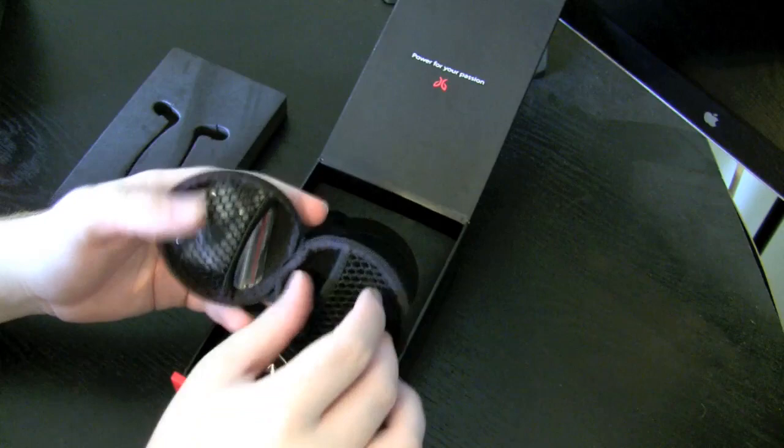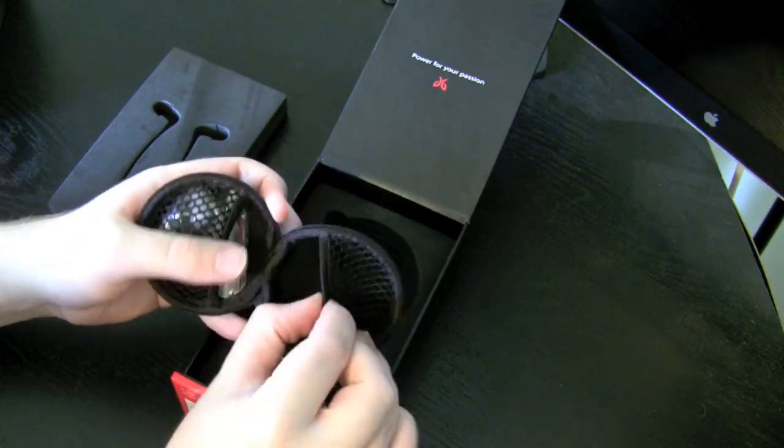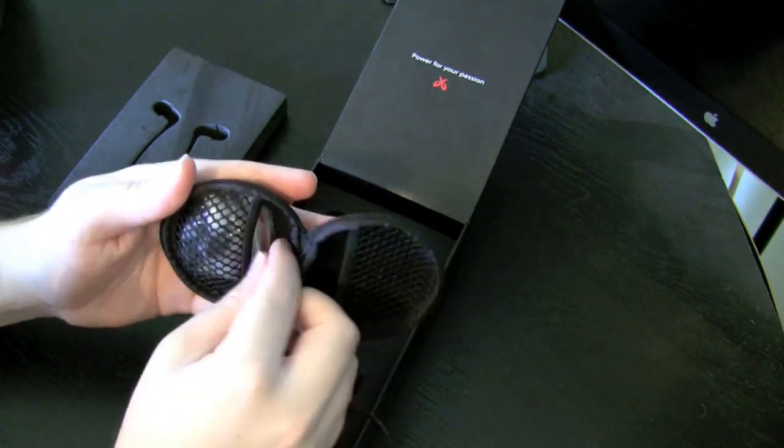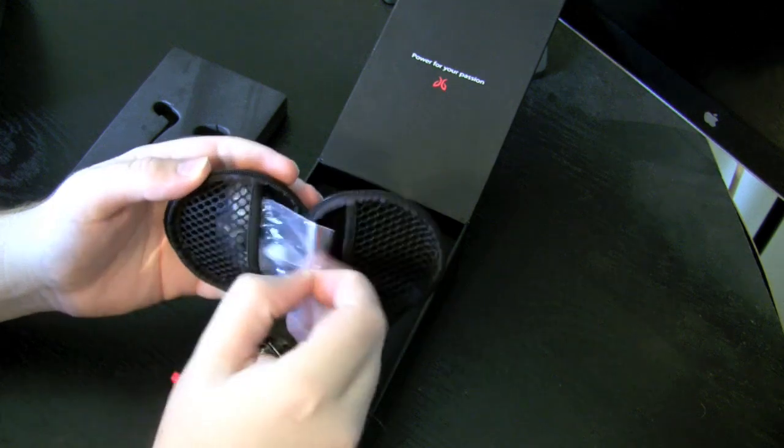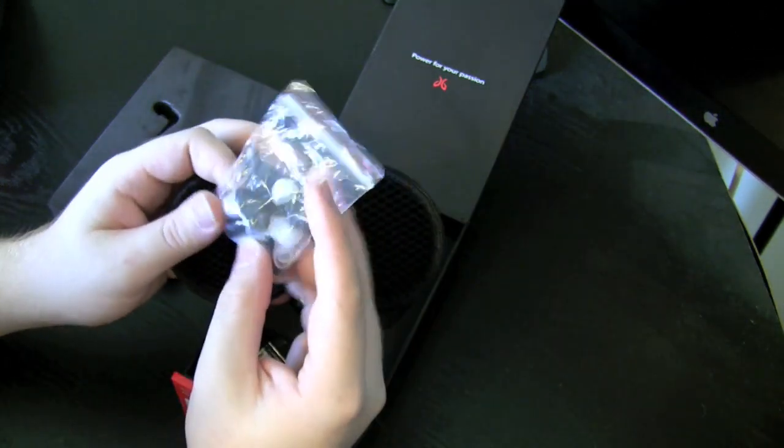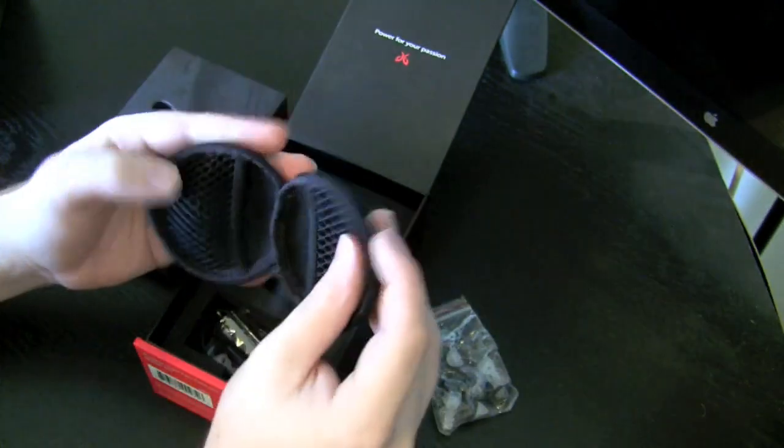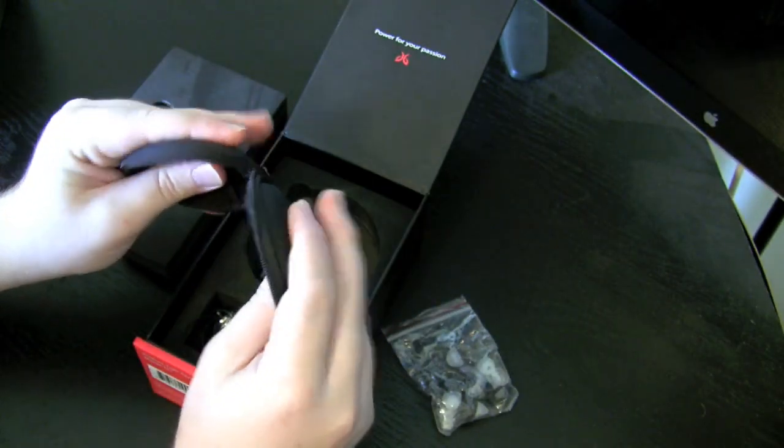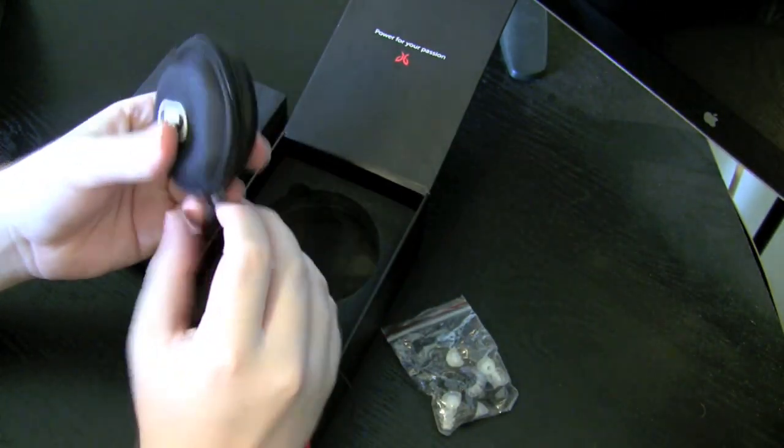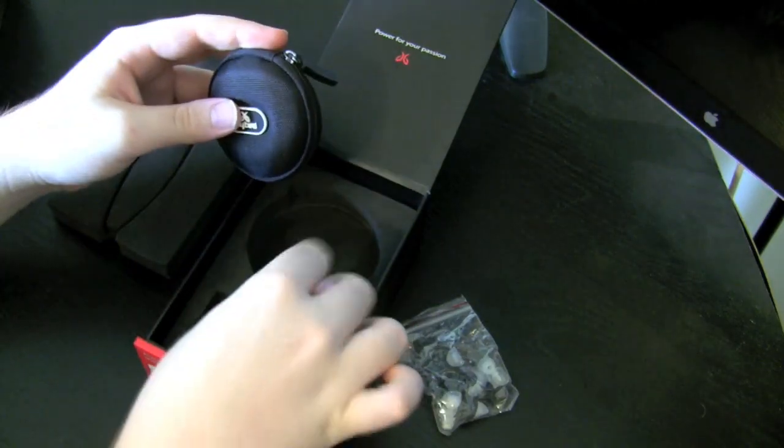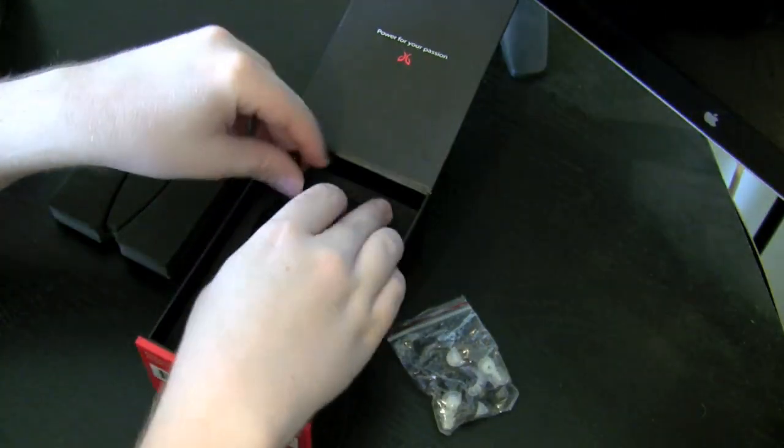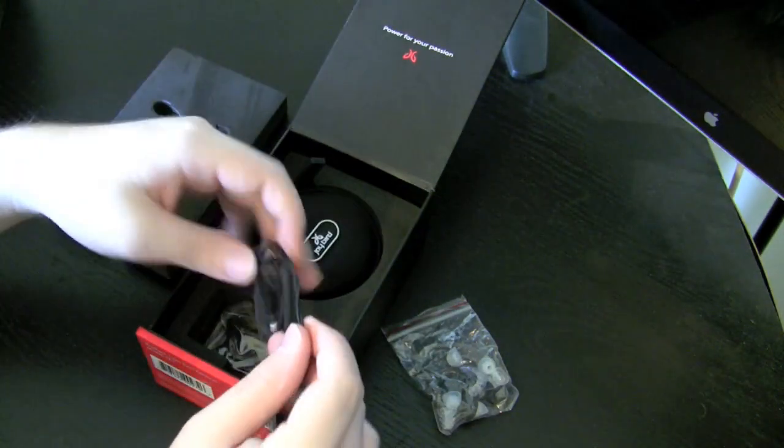Sorry, I kind of got ahead of myself. I didn't even explain what was in here. Inside here looks like there's two mesh pouches and, holy cow, a bunch of ear tips. I'll set those aside. I'll pull those out here in a second. But really nice sturdy case there guys. Let me put that back. Pull the earphone out.